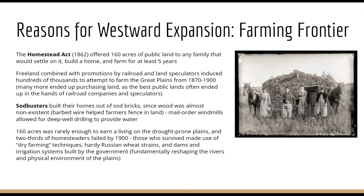Mail-order windmills actually allowed for the deep well drilling that was needed to provide water. Still, 160 acres was really not enough to earn a living on these drought-prone plains. Two-thirds of homesteaders failed by 1900. Those who survived did so because they made use of dry farming techniques and very hardy Russian wheat strains. They had to reshape the environment by creating dams and irrigation systems, many of which were built by the government after 1900.